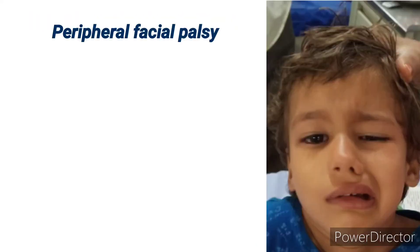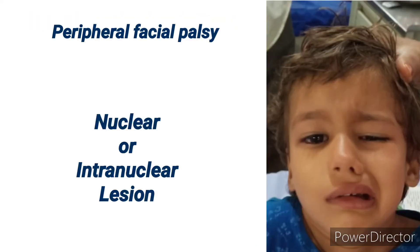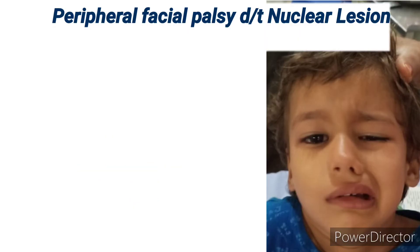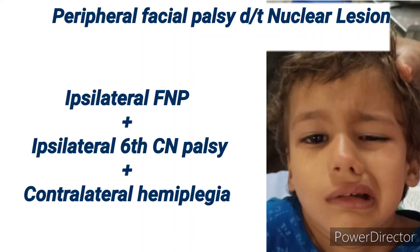For LMN-type facial nerve palsy, lesion in either the nuclear or infranuclear area leads to peripheral facial nerve palsy. The corticobulbar fibers from the upper pons decussate to converge on the facial nucleus. From the facial nucleus, the facial nerve travels upward, backward, and around the nucleus of cranial nerve six. A lesion in the facial nucleus causes ipsilateral facial nerve palsy with sixth cranial nerve palsy and contralateral hemiplegia due to corticospinal fiber damage.